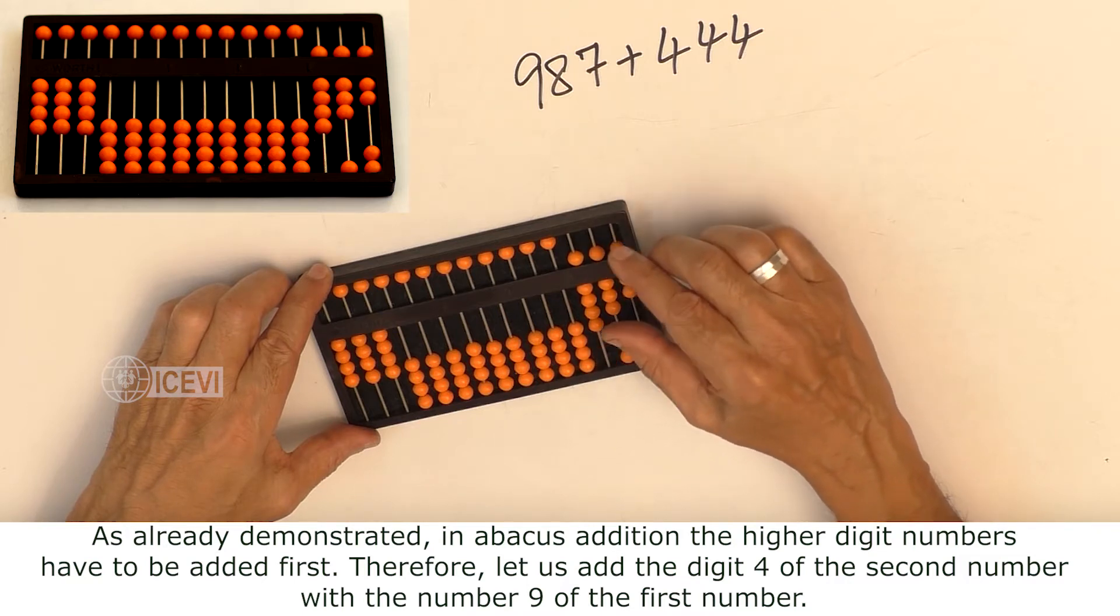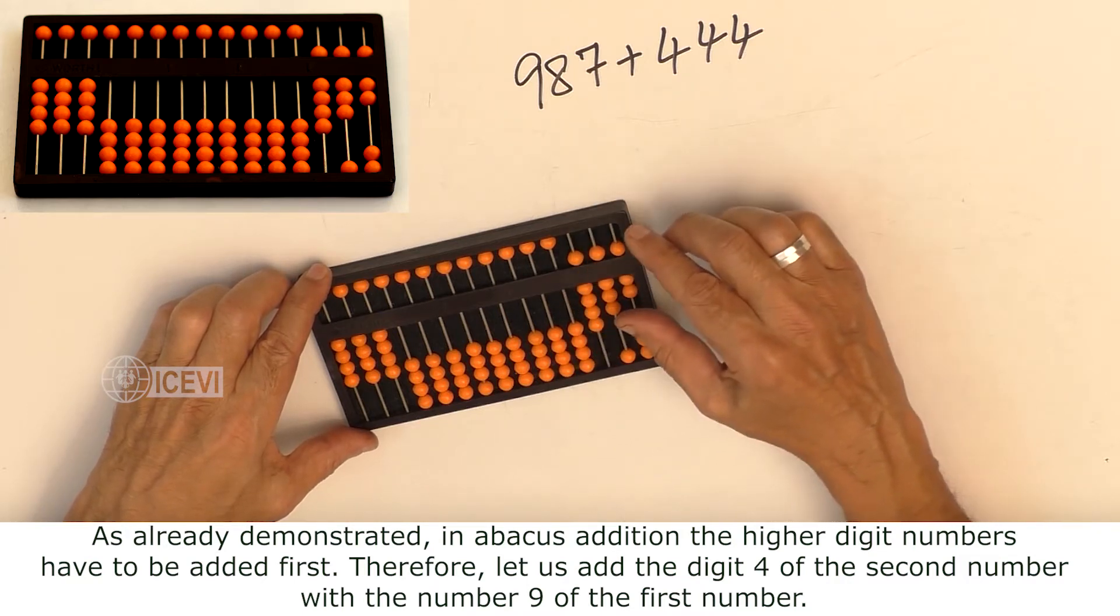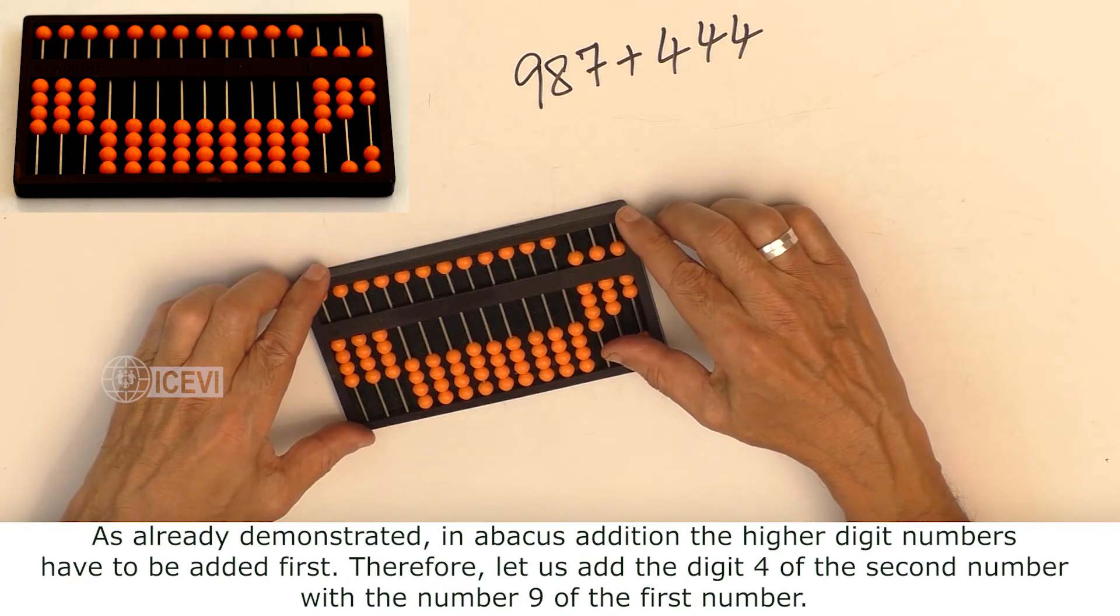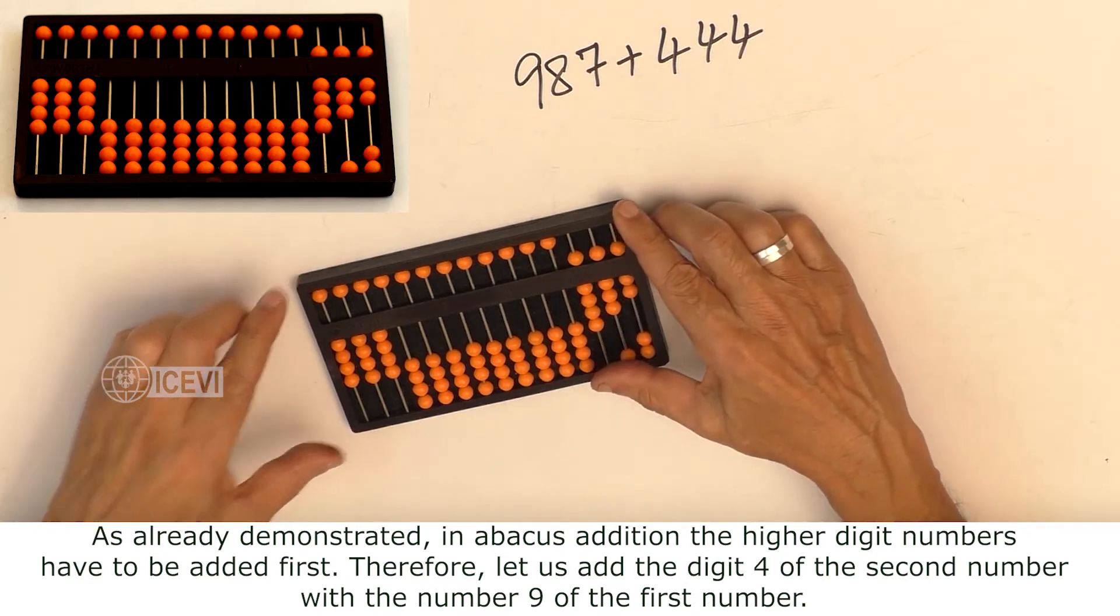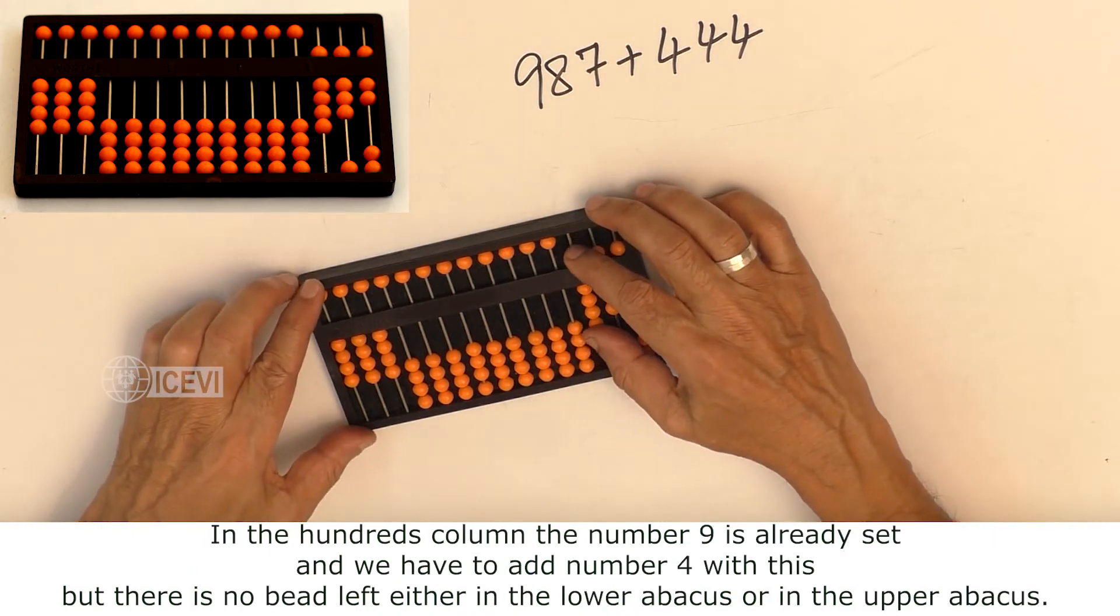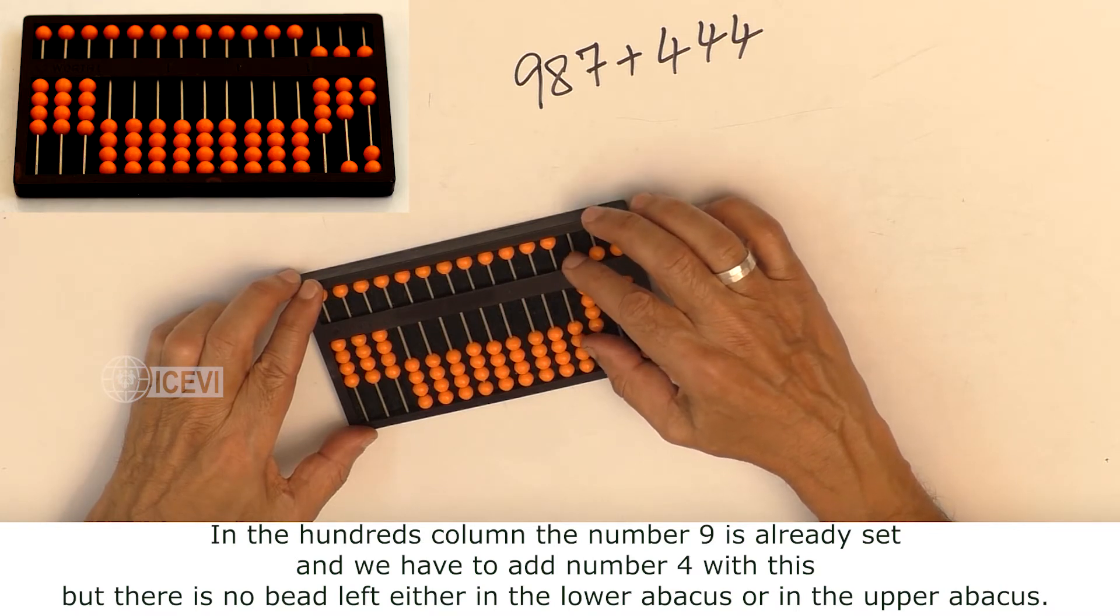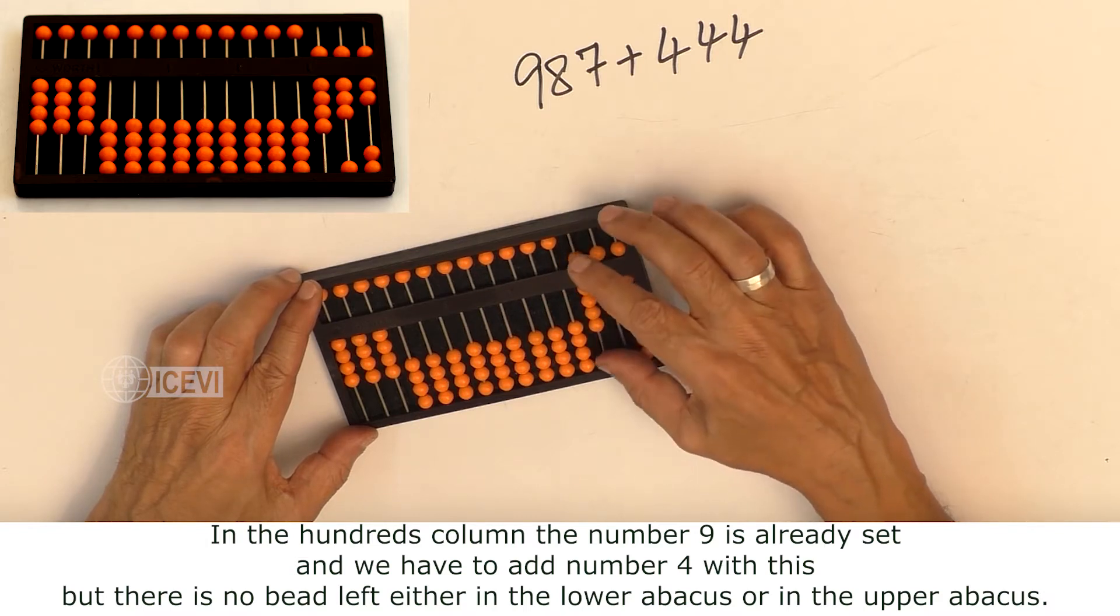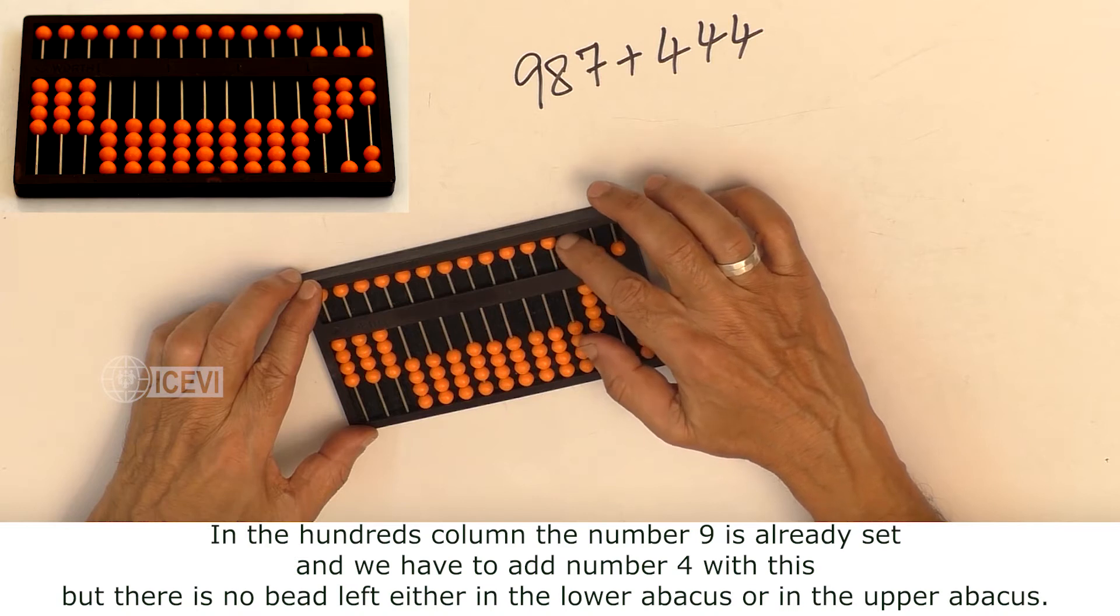Therefore, let us add digit 4 of the second number with the number 9 of the first number. In the hundreds column, the number 9 is already set and we have to add number 4 with this, but there is no bead left either in the lower abacus or in the upper abacus.